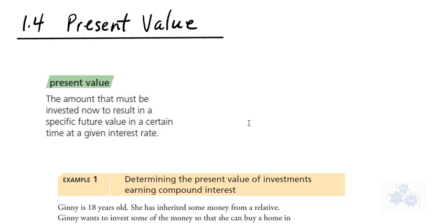Well, if you look in your textbook, and this would be on page 35 in your textbook, present value is defined as the amount that must be invested now, presently, to result in a specific future value in a certain time at a given interest rate.